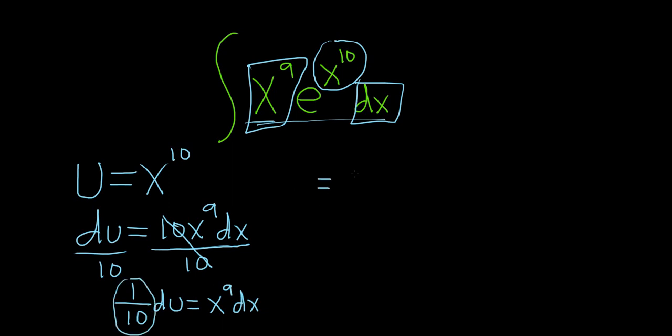As usual, we'll take the 1 tenth and we'll pull it out of the integral. So 1 tenth, and we have the integral sign, and then du.